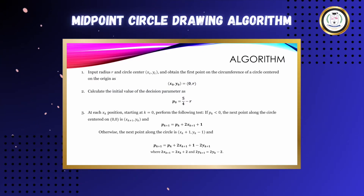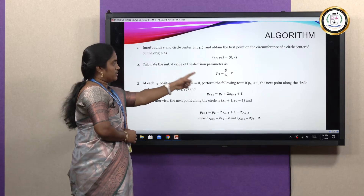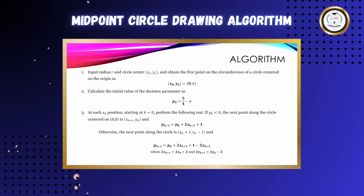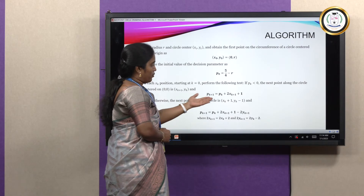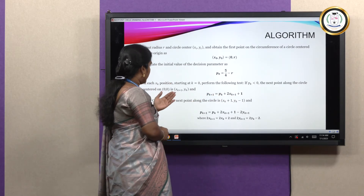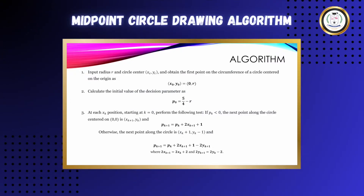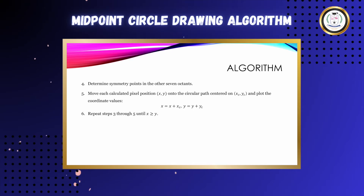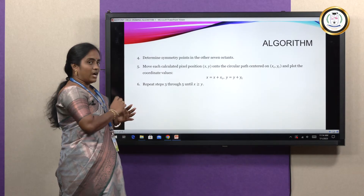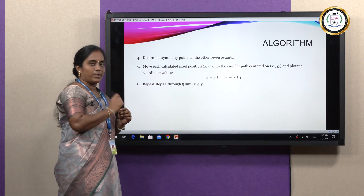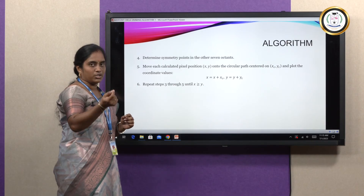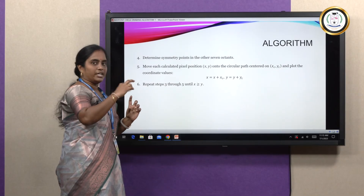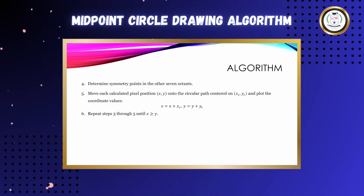The algorithm steps are: first, set the initial point (x0, y0) = (0, r) and initial decision parameter p0 = 5/4 − r, approximated as 1 − r. Then compare p with 0: if less than 0, the next pixel is (xk+1, yk) and use the first case formula for pk+1. If greater than 0, the next pixel is (xk+1, yk−1) and use the second case formula. When the circle needs to be drawn at a center (xc, yc) instead of the origin, simply add xc and yc to each computed coordinate. Repeat until x ≥ y.